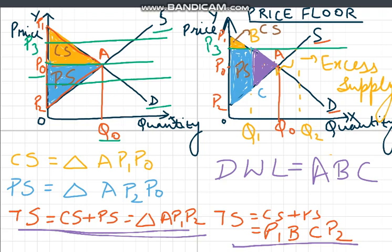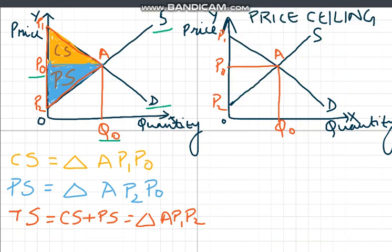Thus, we can conclude that price floor leads to deadweight loss. Now we will take another example of how price ceiling leads to deadweight loss. Again, we can see in our left-hand side panel our consumer and producer surplus without any externality — that is our total surplus without any externality. Now we will consider the case of price ceiling. Price ceiling is the maximum price that can be charged by a producer and the maximum price that the consumer would have to pay for the product.